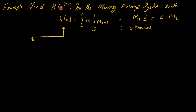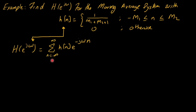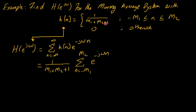The frequency response H(e^{jω}) is the summation from minus infinity to infinity of h[n] e^{-jωn}, the standard definition of the discrete time Fourier transform. Inserting the value of h[n], we have 1 over (m1 + m2 + 1) times the summation, which was from minus infinity to infinity but is now restricted from -m1 to m2, since h[n] is zero otherwise.